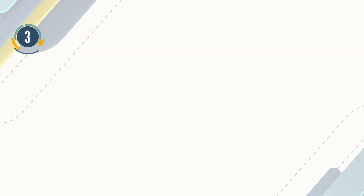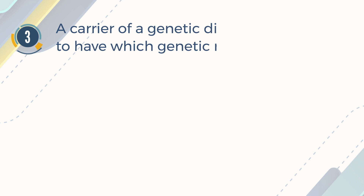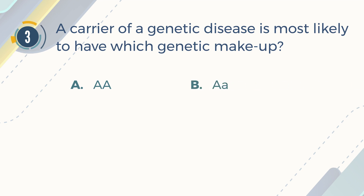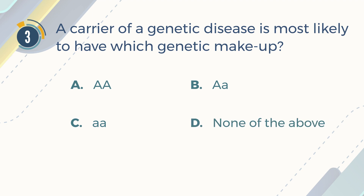Number 3. A carrier of a genetic disease is most likely to have which genetic makeup? A. Homozygous dominant genotype. B. Heterozygous genotype. C. Homozygous recessive genotype. D. None of the above.